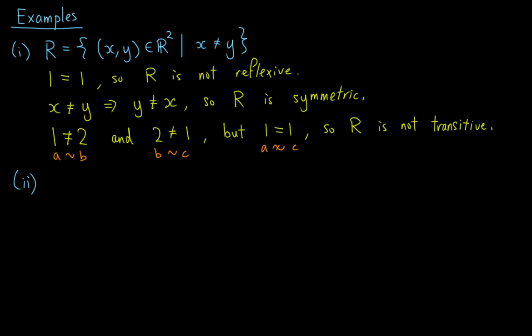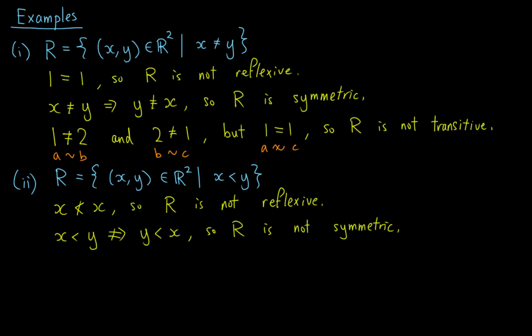Secondly, let R be the set of ordered pairs (x, y) in ℝ² such that x is less than y. Since x is not less than x, R is not reflexive. Also, x < y does not imply y < x, so R is not symmetric. However, x < y and y < z implies x < z, so R is transitive.